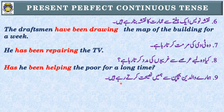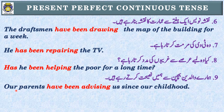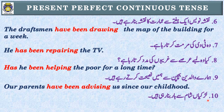Sentence 9: 'ہمارے والدین بچپن سے ہمیں نصیحت کرتے رہے ہیں۔' Identification: 'تے رہے ہیں' اور 'بچپن سے' — Present Perfect Continuous Tense۔ Subject: 'ہمارے والدین' یعنی our parents — plural noun — have been۔ Our parents have been advising us since our childhood.